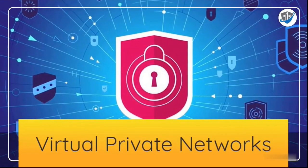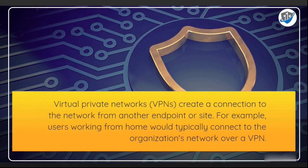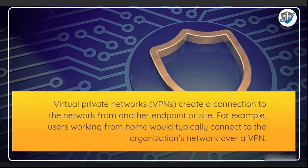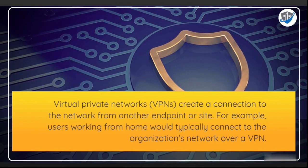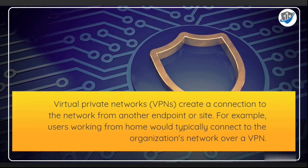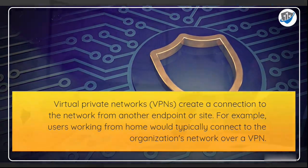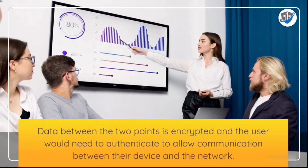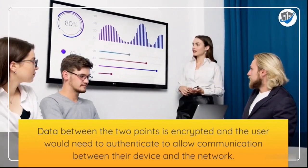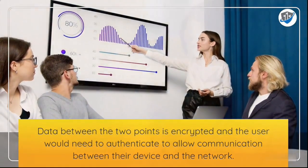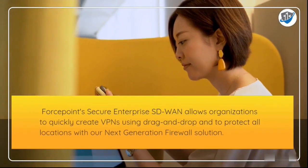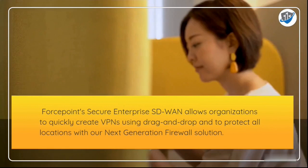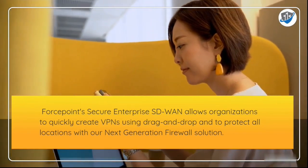Virtual private networks (VPNs) create a connection to the network from another endpoint or site. For example, users working from home would typically connect to the organization's network over a VPN. Data between the two points is encrypted, and the user would need to authenticate to allow communication between their device and the network. Forcepoint Secure Enterprise SD-WAN allows organizations to quickly create VPNs using drag and drop and protect all locations with a next-generation firewall solution.